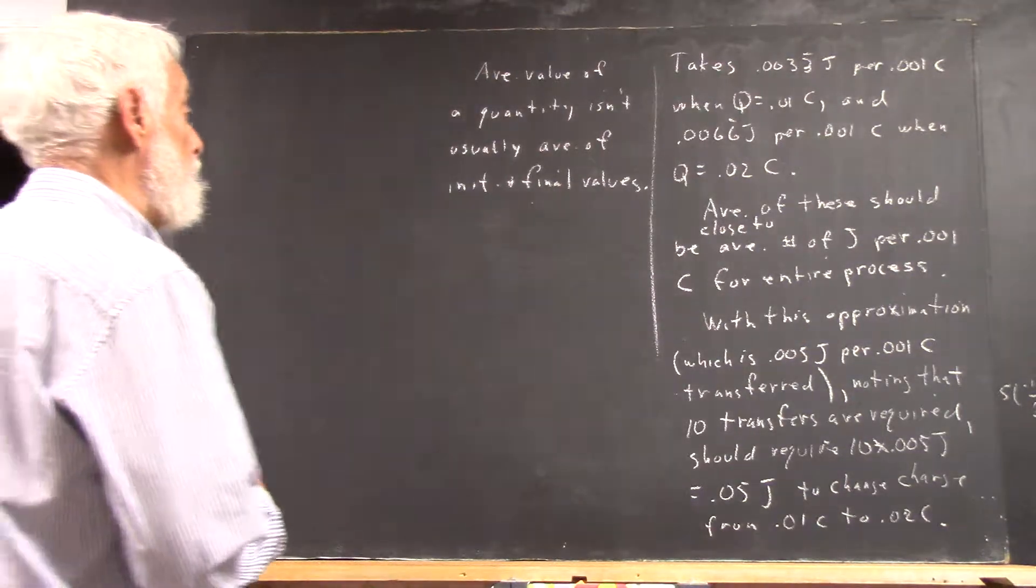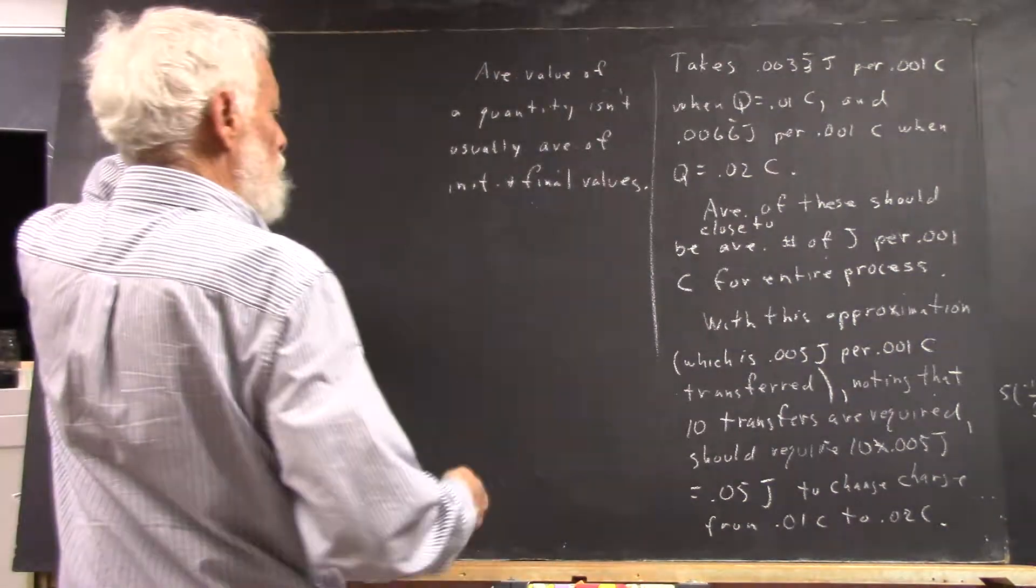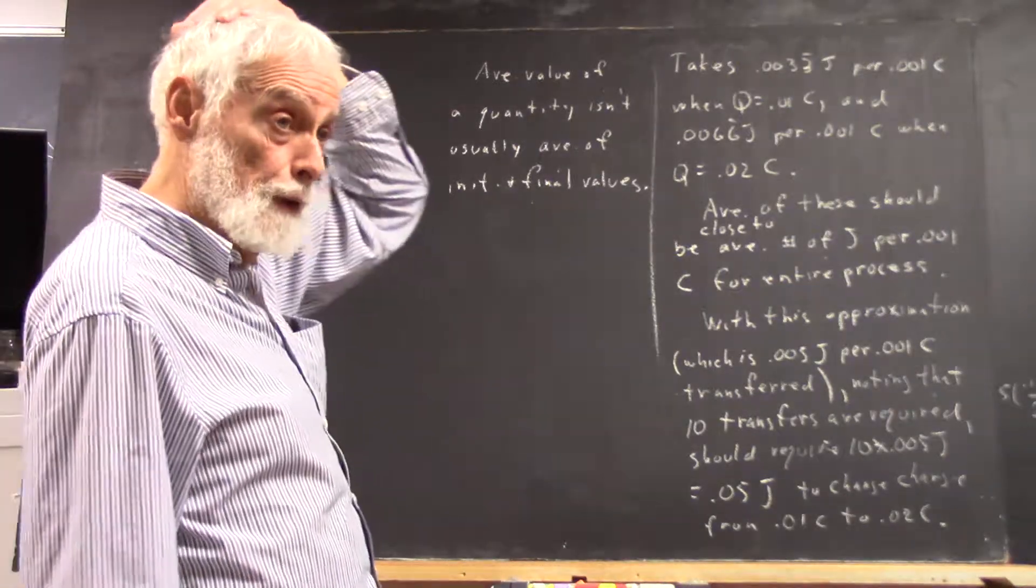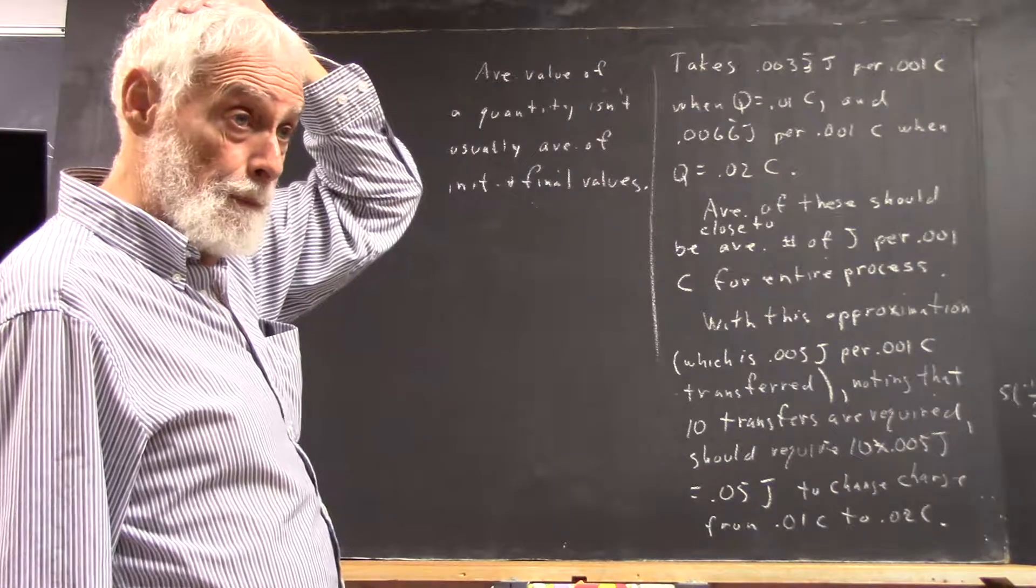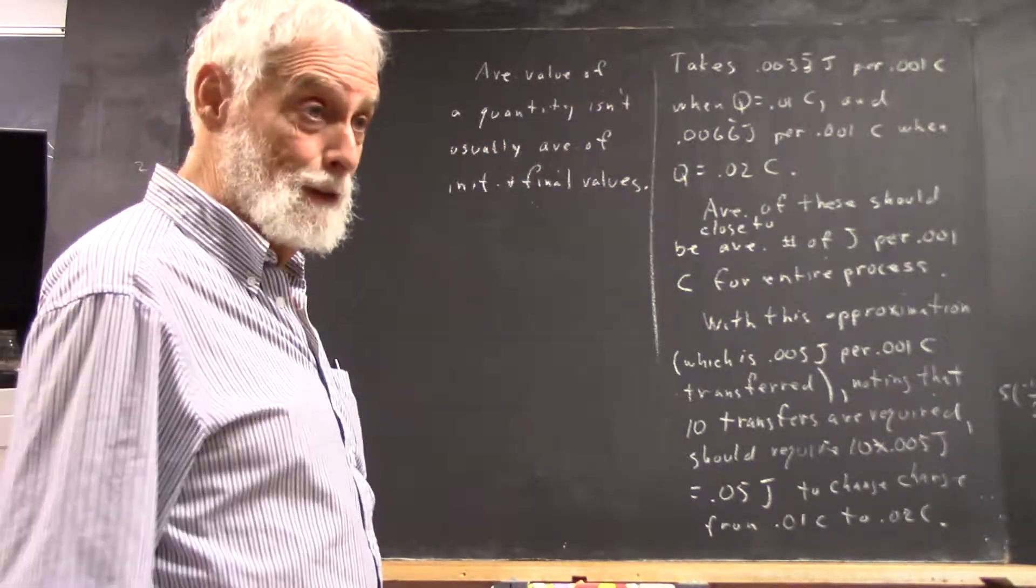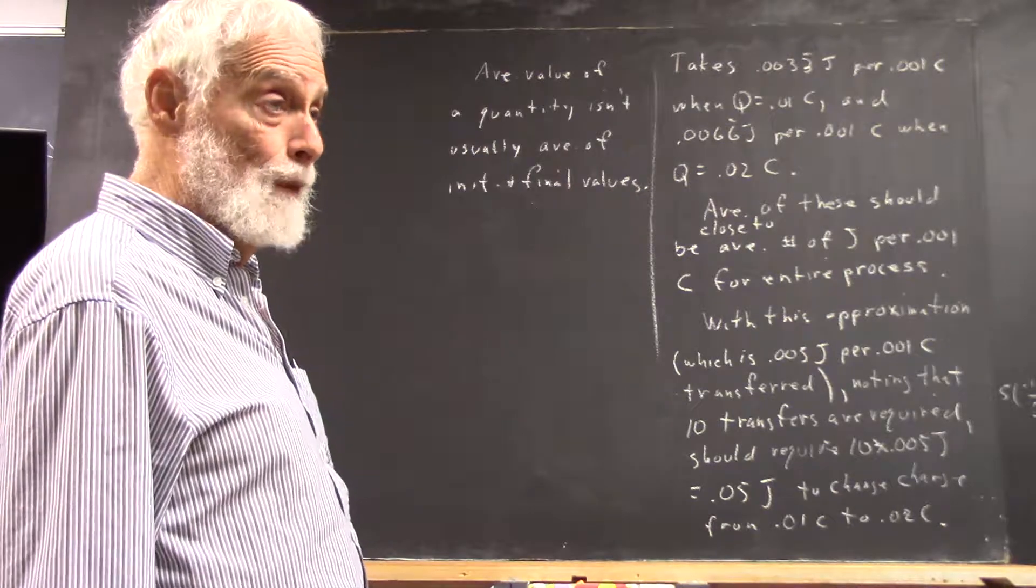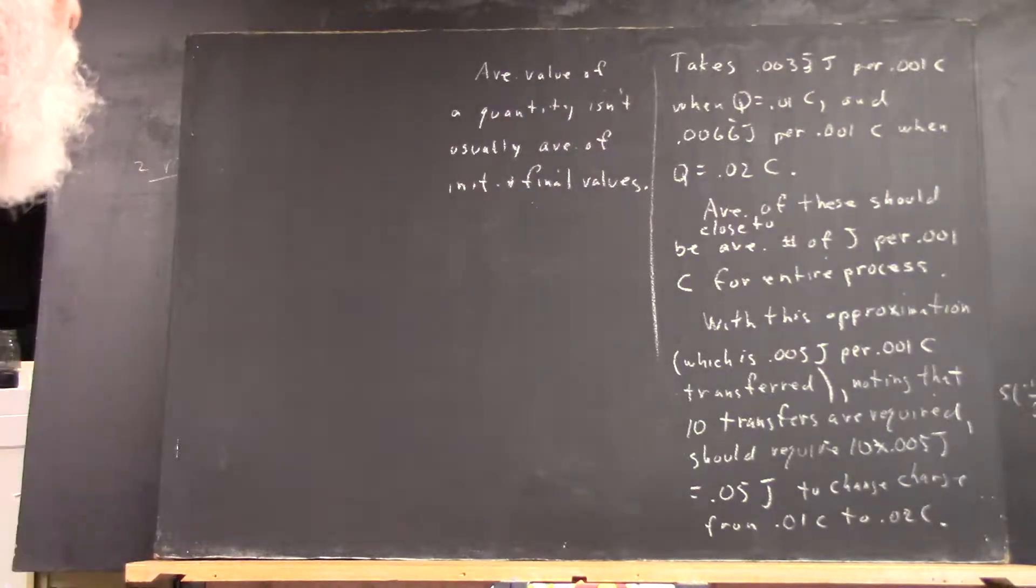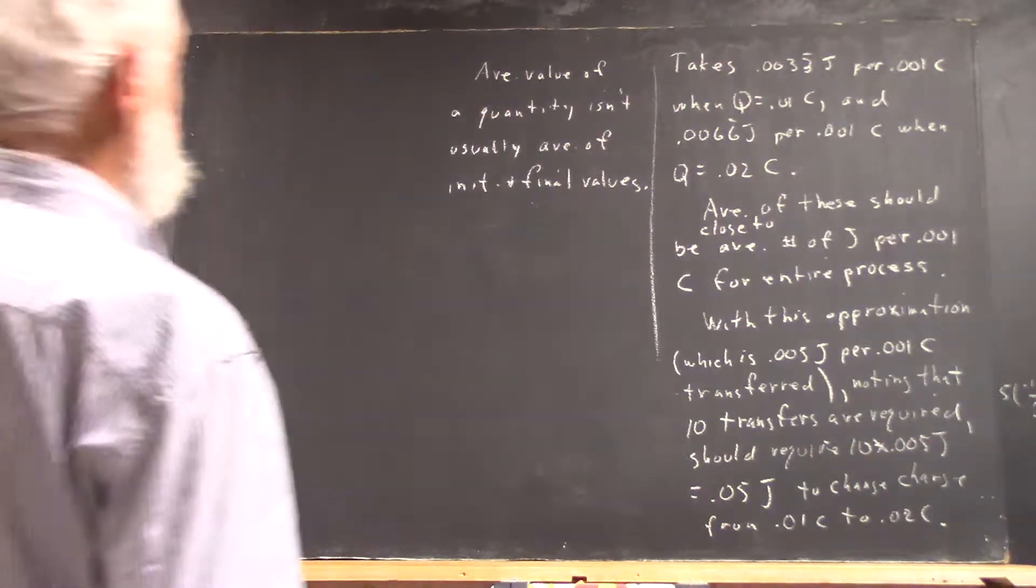We do that with trapezoids, don't we? We're not actually doing a trapezoidal approximation here. We're doing a Riemann sum, a left-hand Riemann sum basically. But that's not my question. When is the average value of the quantity? Why isn't it?